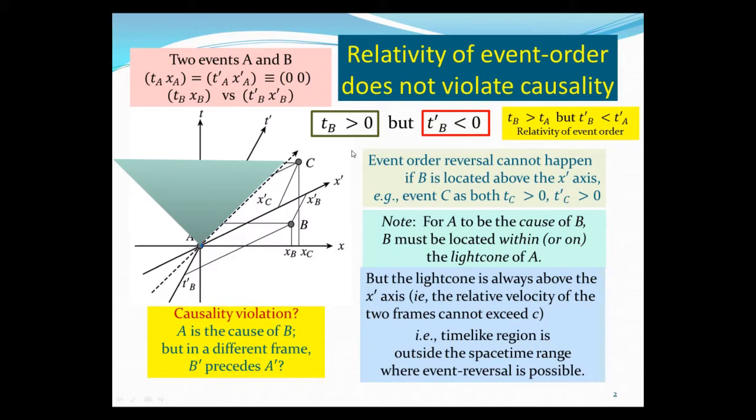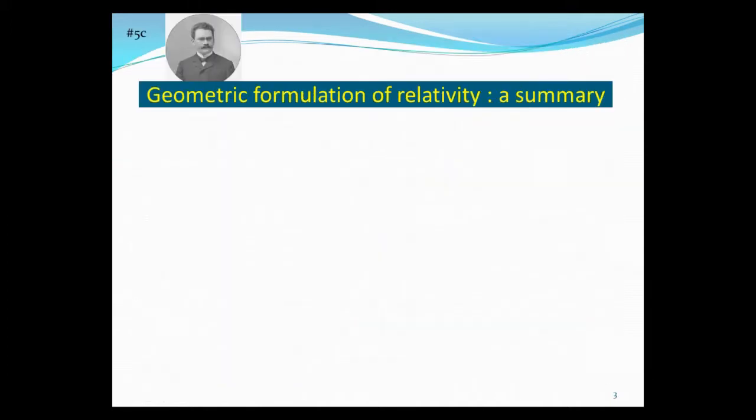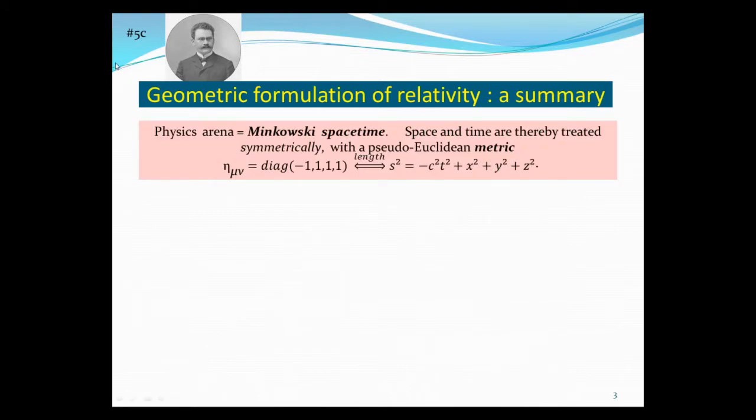Now let me give a summary of the highlights of geometric formulation. The main lesson is to tell us the physics arena is four-dimensional Minkowski spacetime, and in this way space and time are automatically treated symmetrically. It's still Euclidean, but it's pseudo-Euclidean because the metric tensor is a diagonal 4×4 matrix with (-1, 1, 1, 1), because the invariant length has a minus sign in the time position.